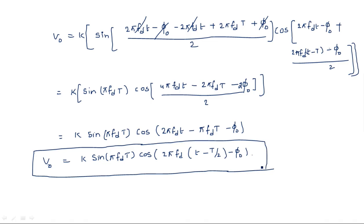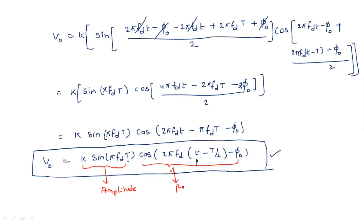Looking at the output v0 = k·sin(π·fd·T)·cos(2π·fd·(t − T/2) − φ₀): the term sin(π·fd·T) acts as the amplitude — it involves T, which is constant for the operation, so it does not vary with time t. The cosine term cos(2π·fd·(t − T/2) − φ₀) varies with time t and acts as the phase information. So in this entire equation, k·sin(π·fd·T) is the amplitude and the cosine part is the phase.